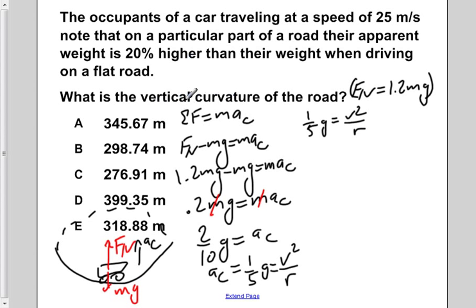In this problem, we're trying to solve for the vertical curvature of the road, so we're trying to solve for the radius. We want to get r by itself. If we multiply both sides by r, we would have g times r divided by 5 equals v squared.